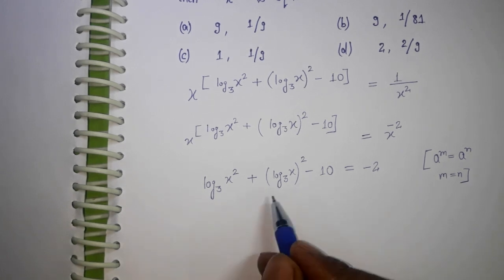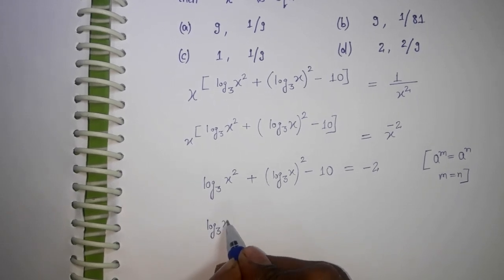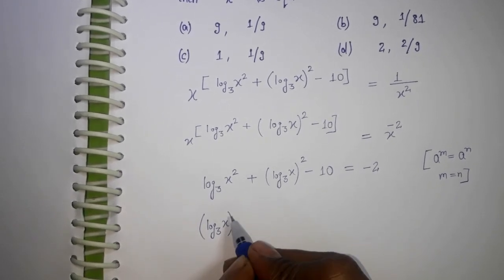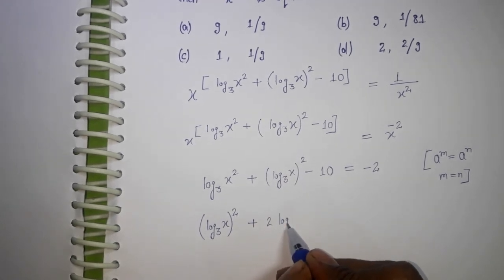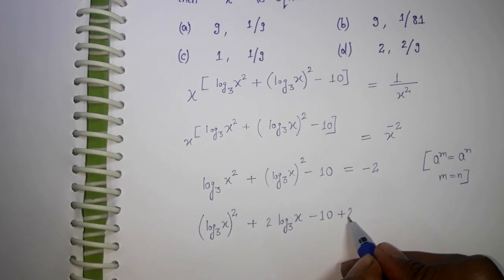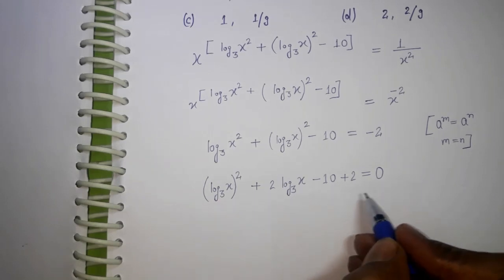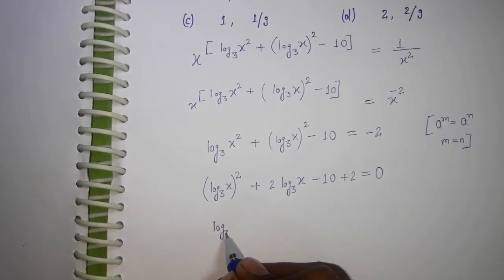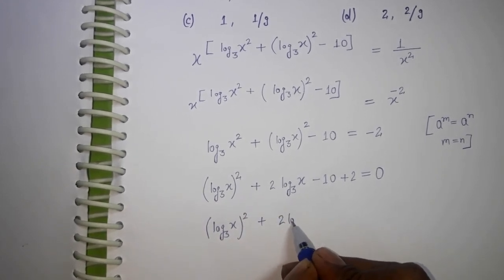Now this can be written this way. Moving -2 to the other side, it becomes +2, giving us 0. And it is becoming a quadratic equation.